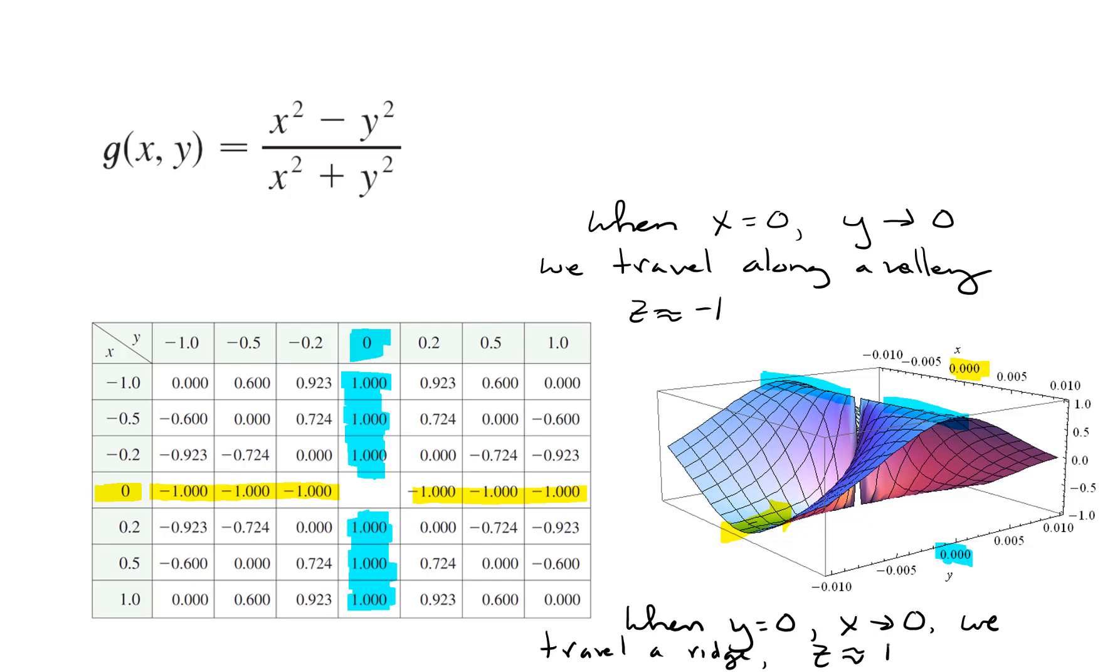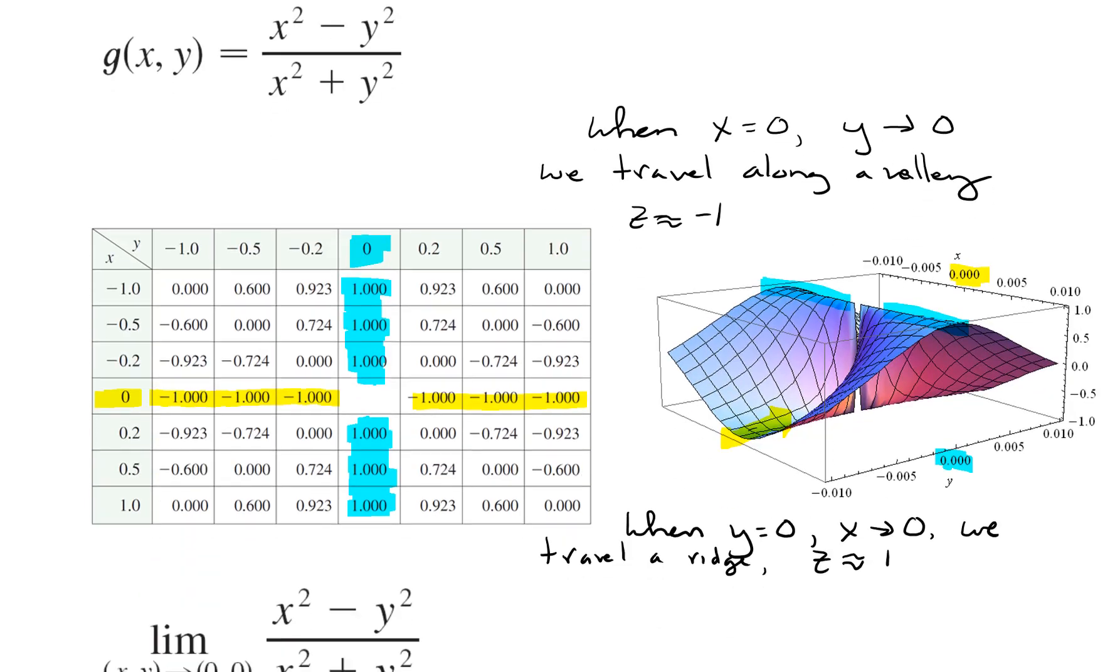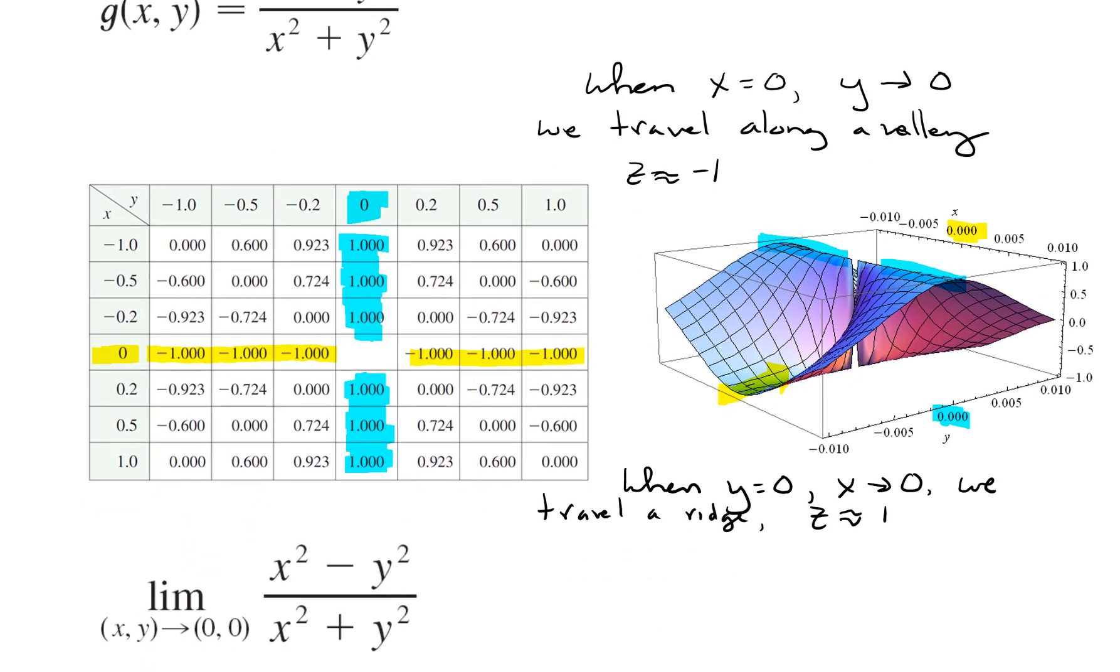In other words, we're getting different values depending on the path that we come in on. And since we're getting different values, this limit does not exist. So when it does not exist, we will write DNE. In the next video, I'll show you how to do this algebraically.